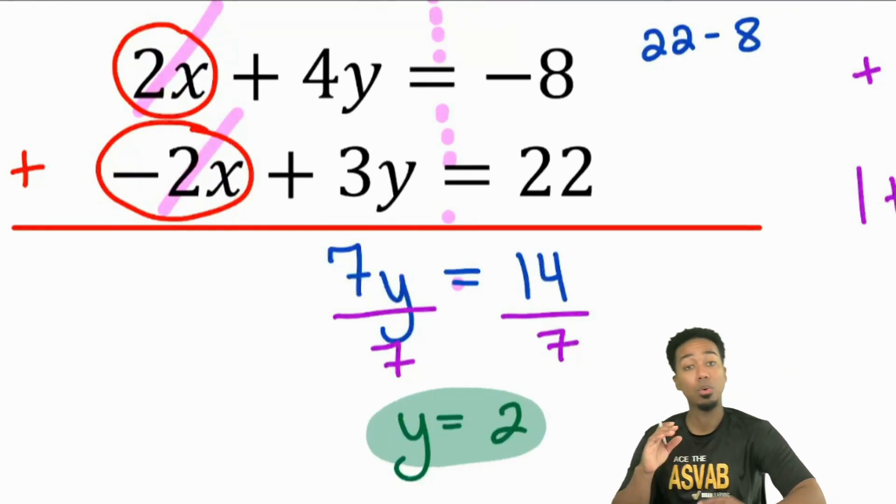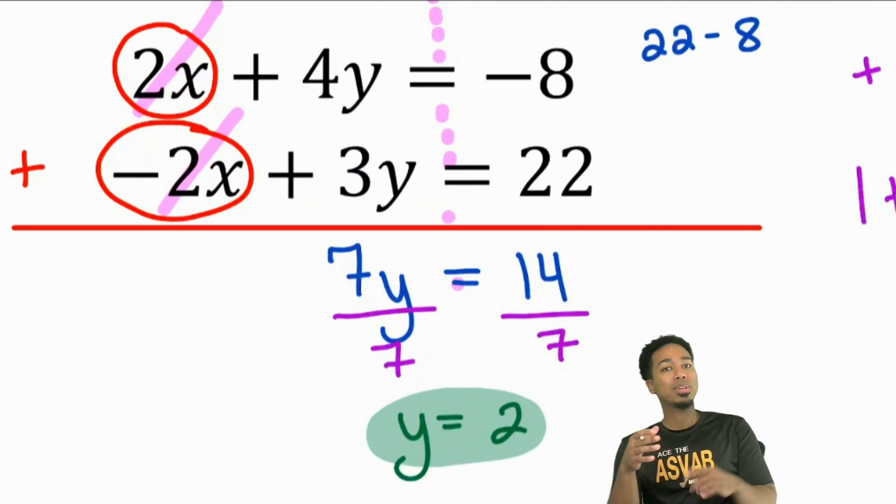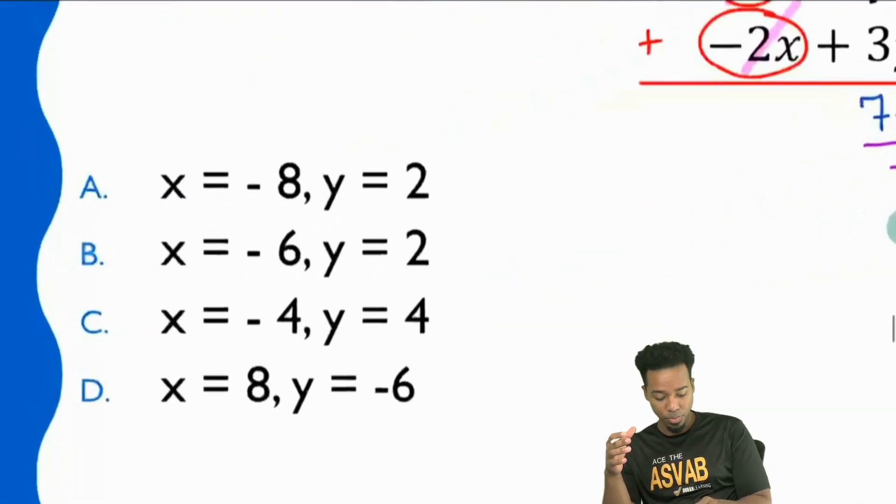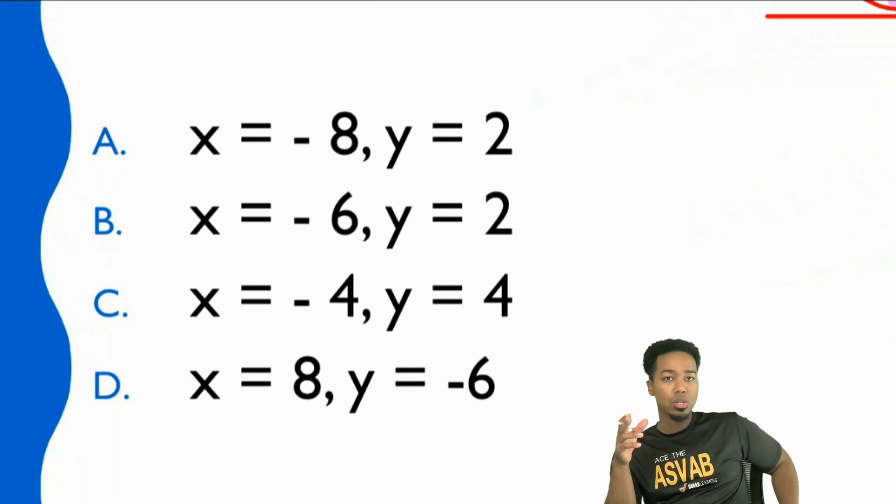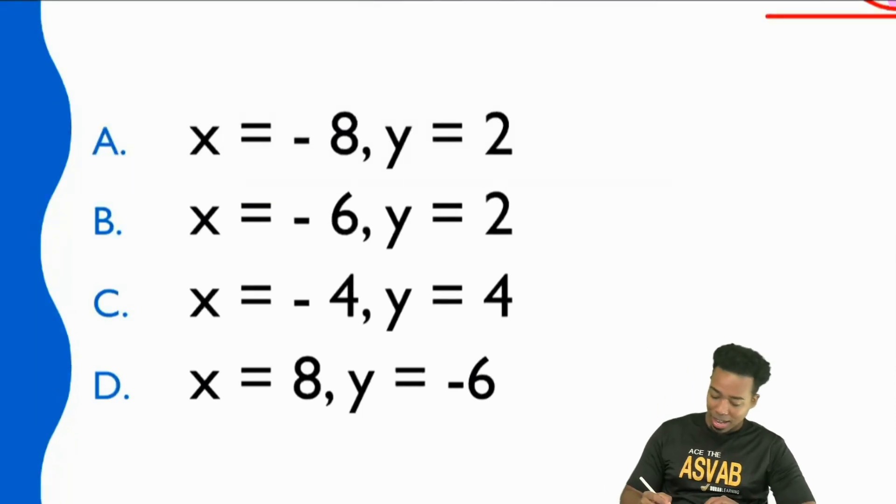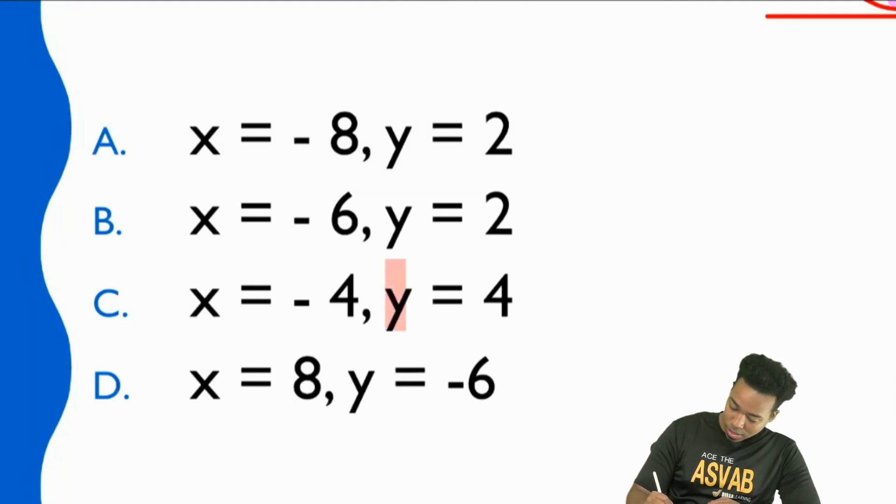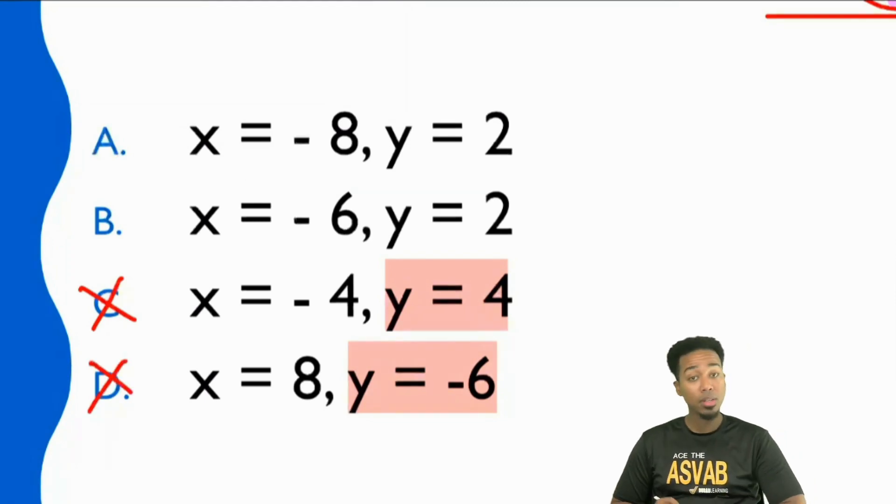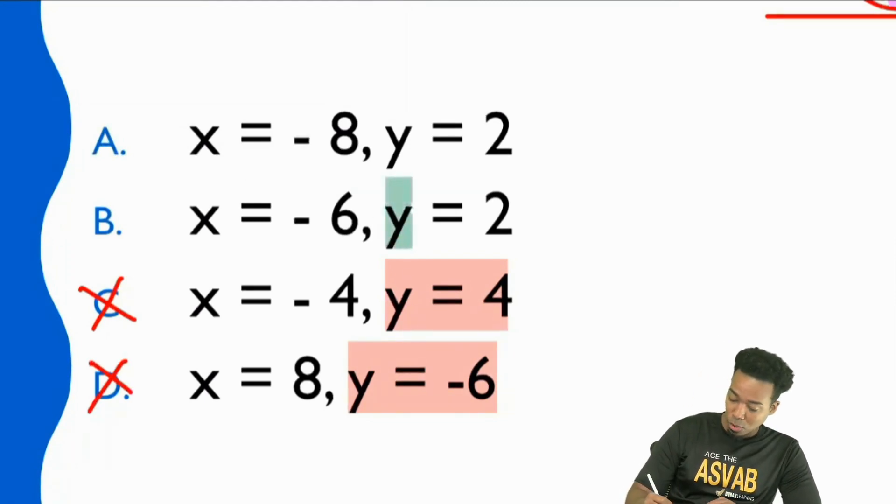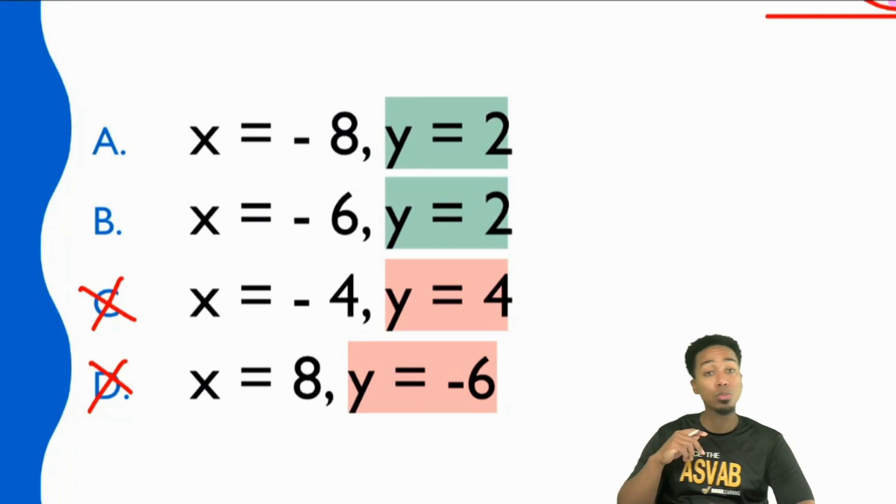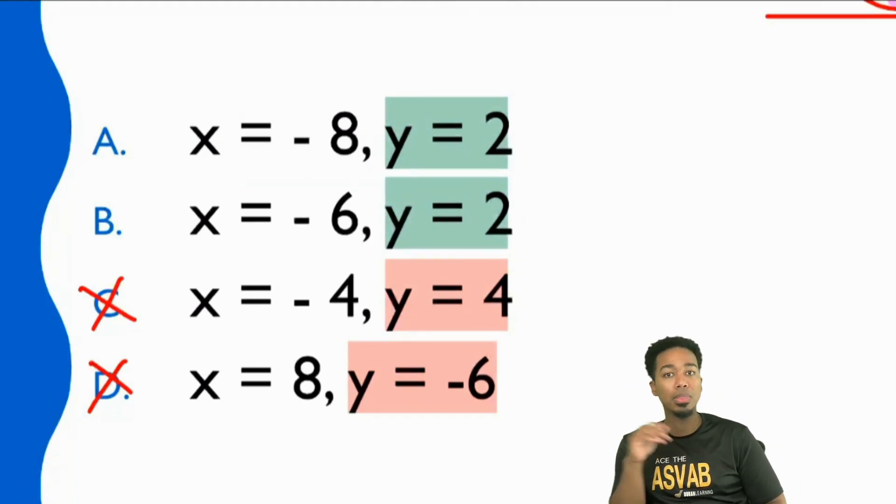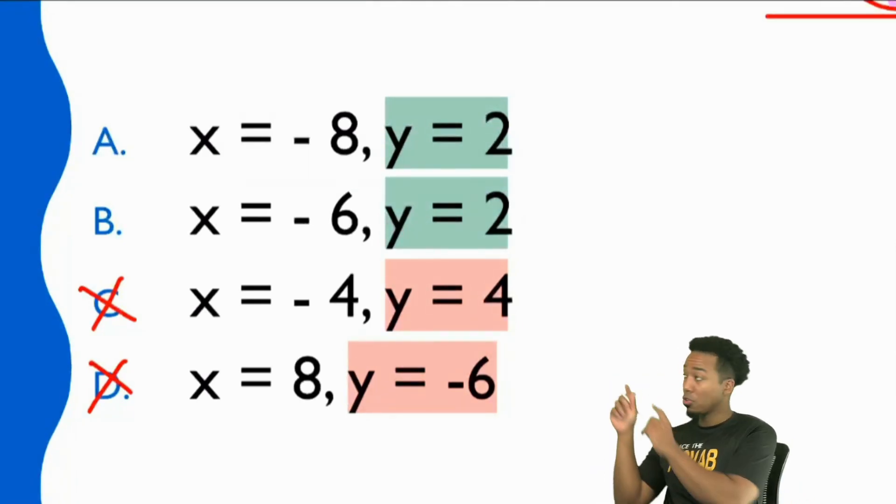If we take a look at the answer choices, everybody, which answer or answers are the only one with 2 for Y? Yeah. So even if you're running out of time, you can absolutely say that because that doesn't match and that doesn't match, these are wrong. These are the only ones that match so far. Y equals 2 is what we got for Y. So boom, that's these two answers. It's either going to be A or B.